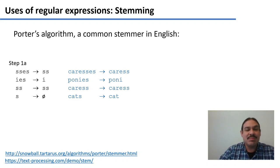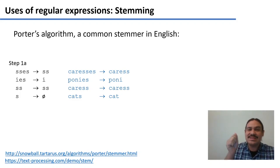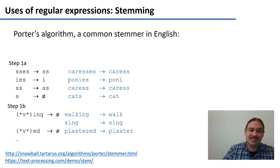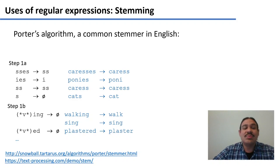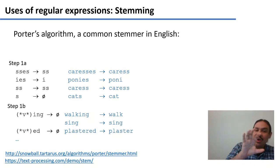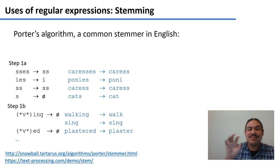If it gets something like 'ponies,' it replaces 'ies' with 'e' — ponies to pony. If you get something like 'cats,' it transforms cats to cat. It then performs another step, again with regular expressions, where it tries to find words it knows are verbs in a word list, and replaces the 'ing' in 'walking' with zero — making 'walk.' It takes 'plastered' and makes 'plaster,' replacing 'ed' with zero.